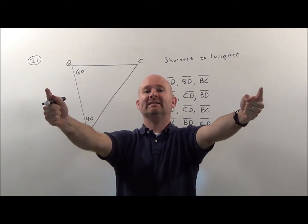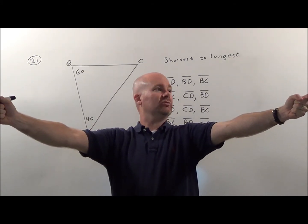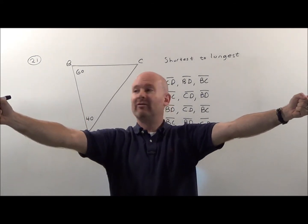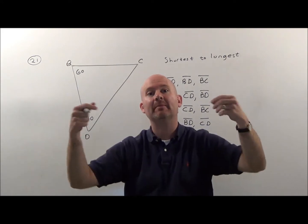But the other guy who's 60, notice he's got to be bigger, so the side across from him must be longer. Here's 40, 60 is wider, so the side across from him has got to be bigger.